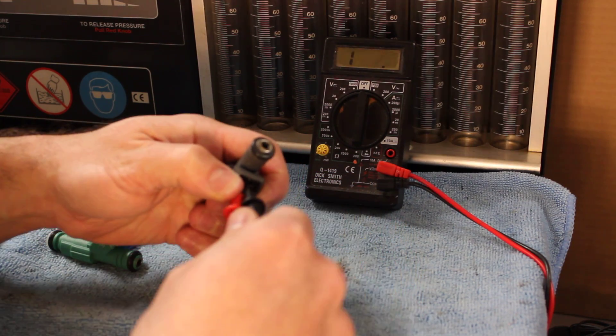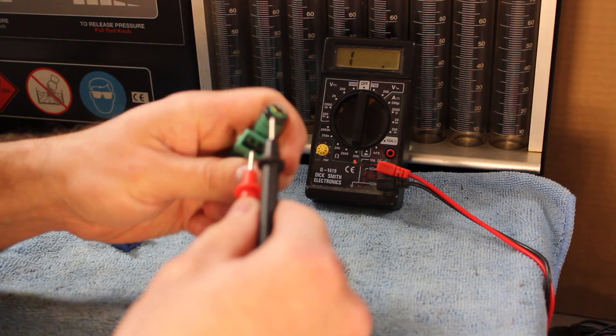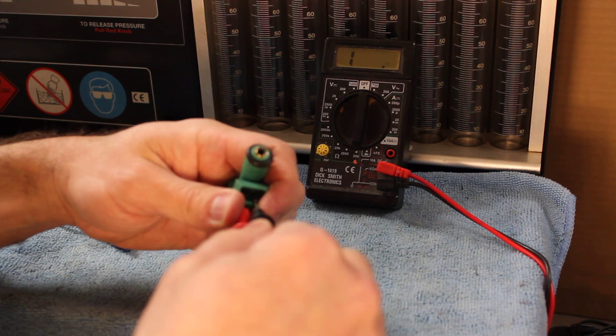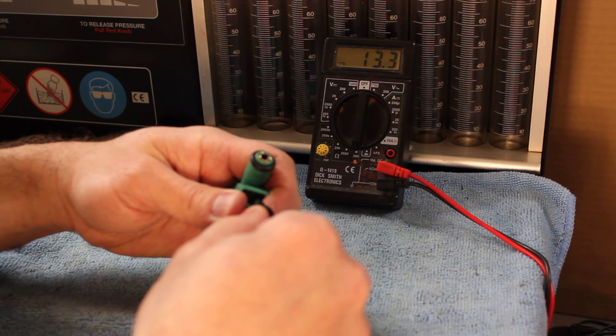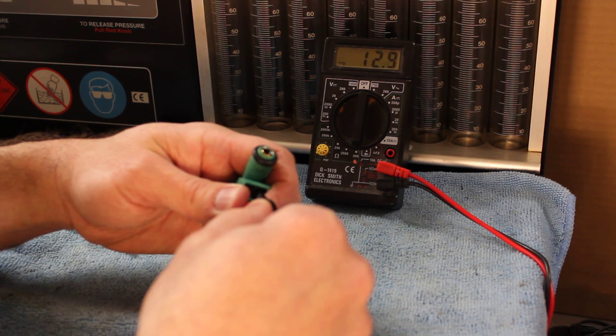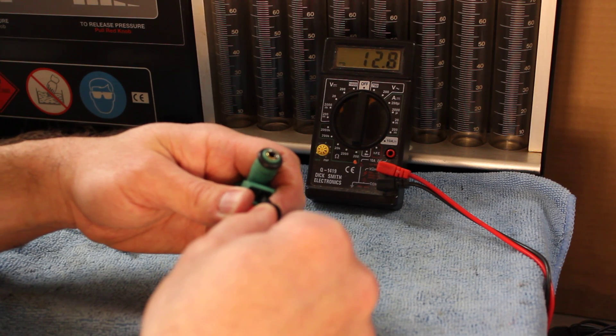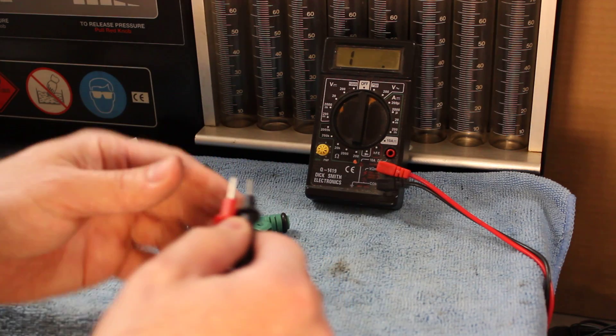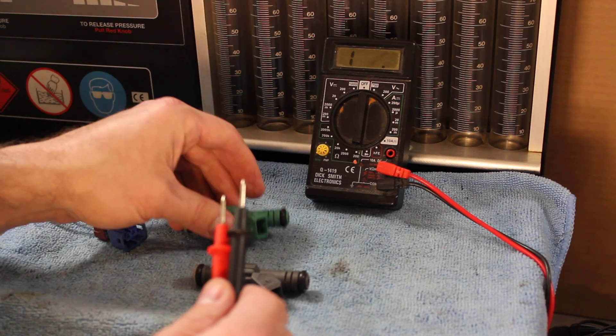What we're checking for is just that the injectors from that set all have the same resistance, or close to the same. If you find your injector is different to all the others, that one will flow a different rate and will be faulty, so you'll have to replace that injector.